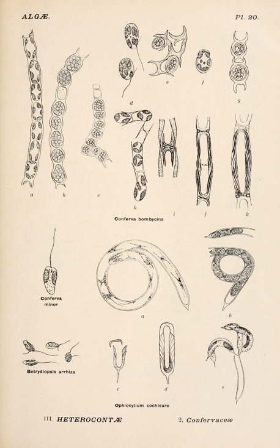Yellow-green algae, or the Xanthophycei, are an important group of heterokont algae. Most live in fresh water, but some are found in marine and soil habitats. They vary from single-celled flagellates to simple colonial and filamentous forms.